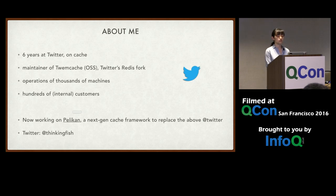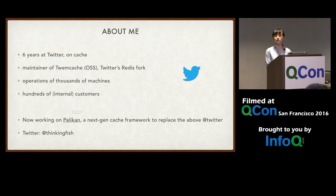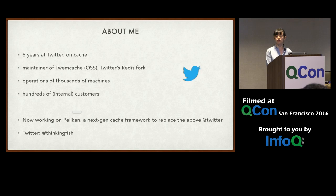We're a small team that's both in charge of development and operations. Our fleet includes thousands of machines running cache servers. There are more running cache clients, but those are libraries on hardware we don't control. Internally we have hundreds of customers. As you may know, Twitter is a microservice shop — one of the first companies to champion microservices — so even though Twitter presents one product, internally we have lots of different services and teams, which translates into lots of cache users.